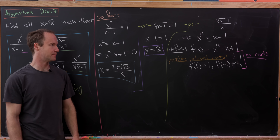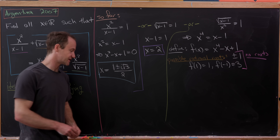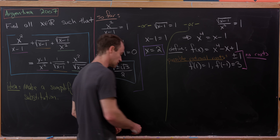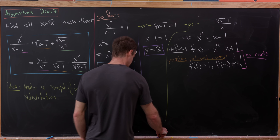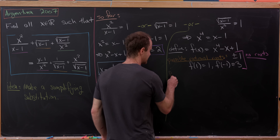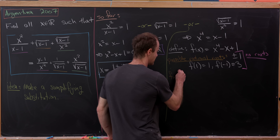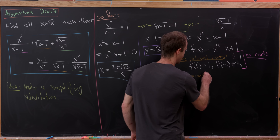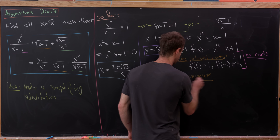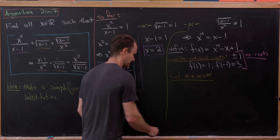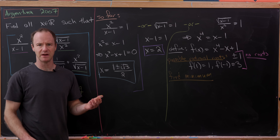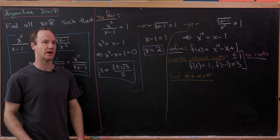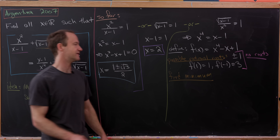Moving to the case Y equals 1: the square root of (x minus 1) equals 1. Squaring both sides gives x minus 1 equals 1, so x equals 2. That is a legitimate real solution. So we have at least one solution: x equals 2.